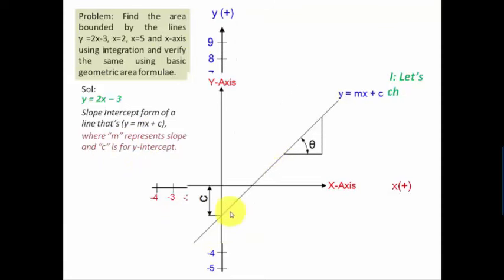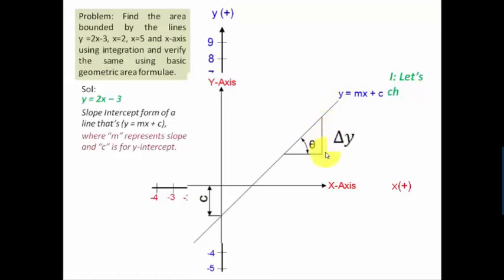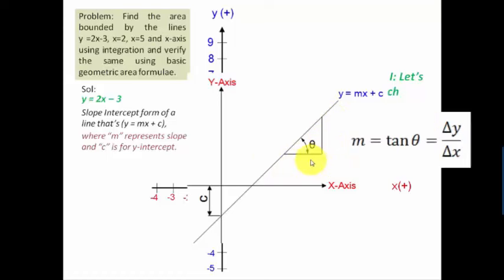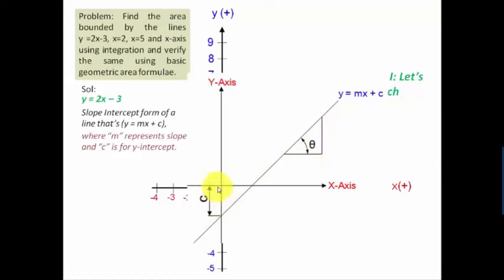You can see this line making a certain angle theta with the positive x-axis. Slope is represented by tan theta, so m equals tan theta. Looking at the right triangle formed, this is the change in y (delta y) and this is the change in x (delta x), so m equals delta y upon delta x. As for the y-intercept, this line intersects the y-axis at some point, and the distance of that intersection from the origin is the y-intercept c — which could be above or below the origin depending on the position of the line.